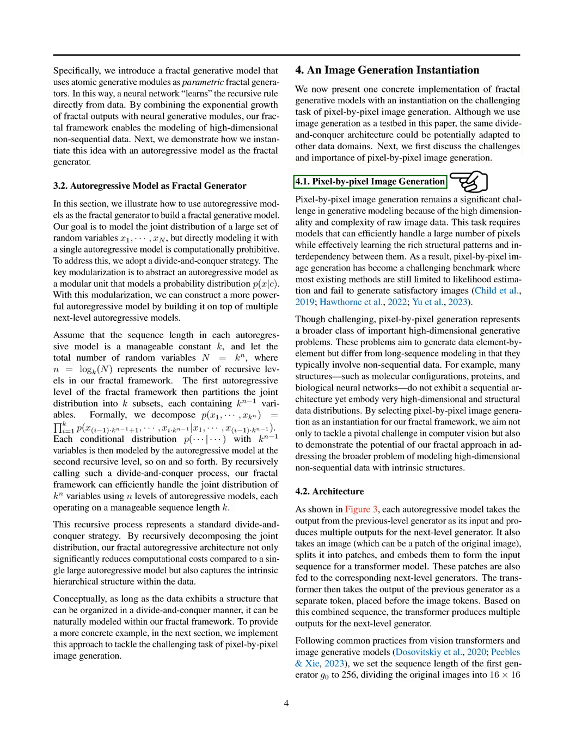In this section, we address the challenge of pixel-by-pixel image generation, which is difficult due to the complexity and high dimensionality of image data. Our goal is to create models that can manage numerous pixels while learning the intricate patterns and relationships among them. This task has become a benchmark in generative modeling, where many existing methods struggle with generating satisfactory images, primarily focusing on likelihood estimation.